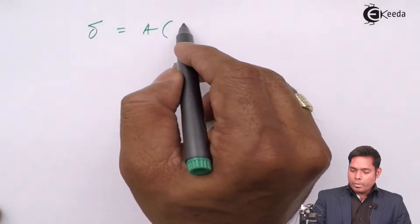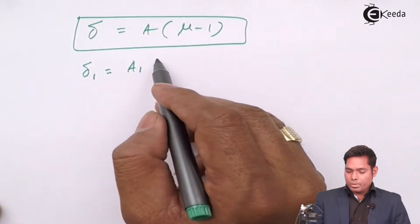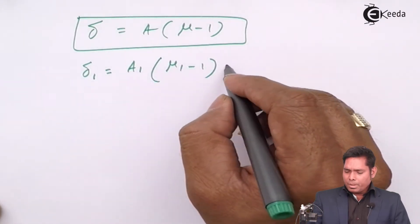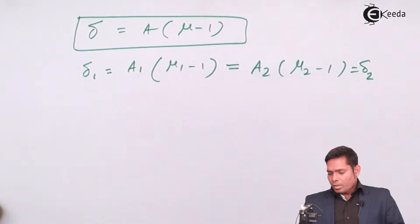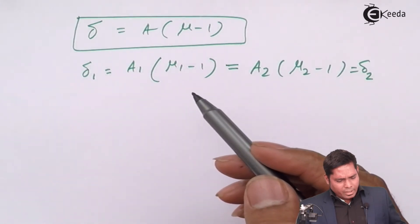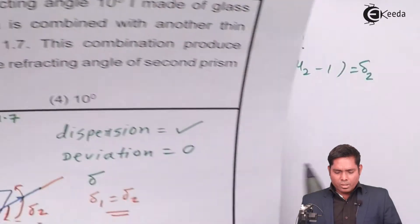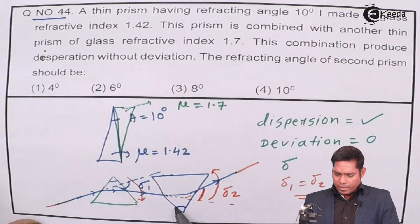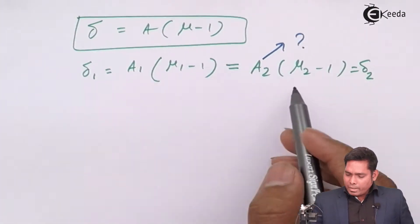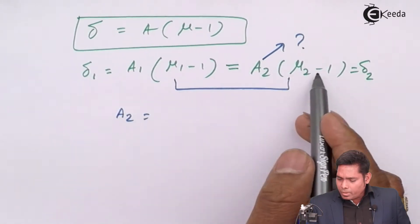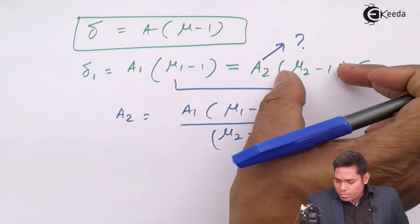I write that delta equals a into (mu minus 1). This working formula gives delta 1 equals a1 into (mu 1 minus 1), which must be equal to delta 2, which equals a2 into (mu 2 minus 1). We are to find the refracting angle of the second prism, so a2 is required. a1 is given, which is 10 degrees. So a2 equals a1 (mu 1 minus 1) divided by (mu 2 minus 1).